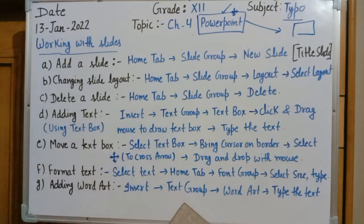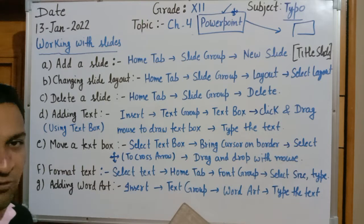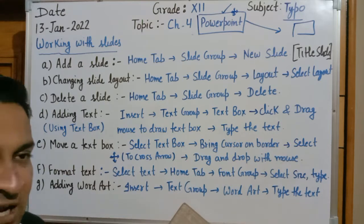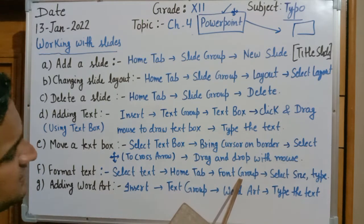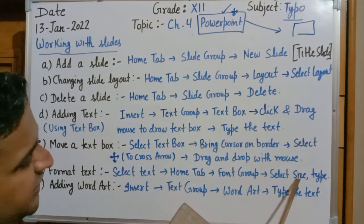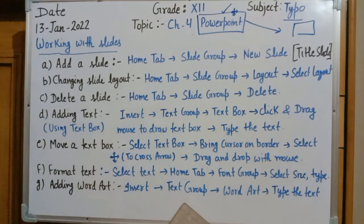Next is how to format text. Select the text you want to format, then go to the Home tab. You can do formatting related to font size, font color, and font type by selecting the Font group option and choosing the specific size, type, or color you want to edit.